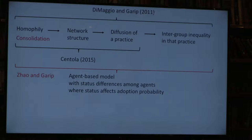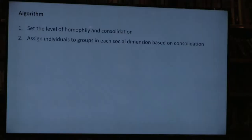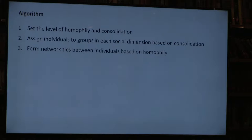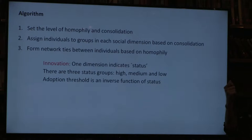We have an agent-based model with status differences among agents and assume that status affects adoption probability—high-status individuals are the first adopters, and everything diffuses from that. Homophily and consolidation are key parameters. Our algorithm is simple: we set the level of homophily and consolidation using the same architecture Damon used, based on Duncan's work with Dodds and Newman. The innovation we bring is taking one social dimension to indicate status, with three status groups—high, medium, and low—and adoption threshold is an inverse function of status. High-status individuals have simple contagion (threshold one); medium-status requires two people; low-status requires three.